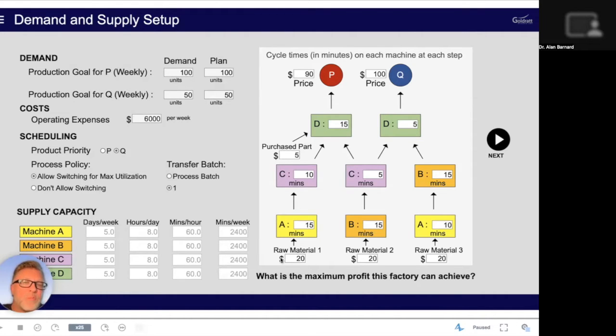And this is essentially showing the routing. To make one of P, it has to process raw material one on machine A. That then gets transferred to machine C. Takes 10 minutes on machine C. Then you need another part before you can assemble them. That requires raw material two to be processed on machine B for 15 minutes. Then goes to C five minutes. Once you have both parts together with the purchase part, you can assemble them using machine D. And then you have your finished product.